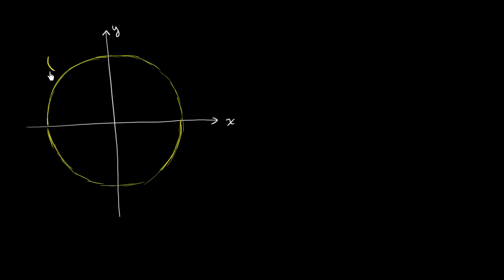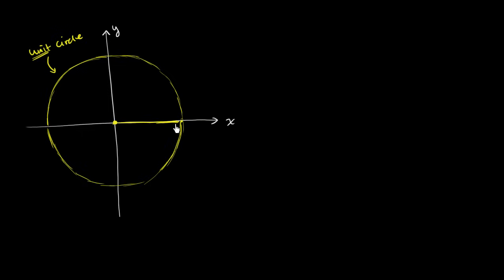What I have attempted to draw here is a unit circle. The fact that I'm calling it a unit circle means it has a radius of 1. I centered it at the origin, so this length from the center to any point on the circle is of length 1.